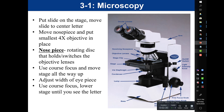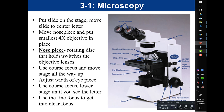Look in your microscope and use the coarse focus — the bigger knob closer to the base — to lower the stage until you can see the letter E in the ocular lenses. Once you begin to see the specimen, switch to the fine focus knob to fine-tune the image. The coarse focus moves the stage up and down quickly; the fine focus moves it much more slowly. Start with the coarse focus, then fine-tune with the fine focus.